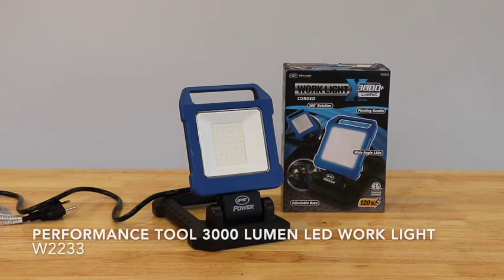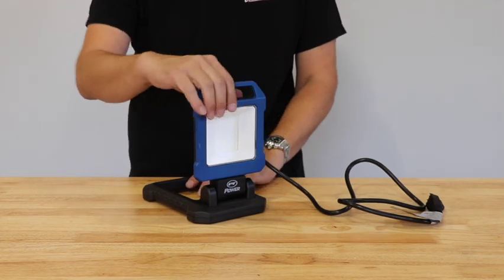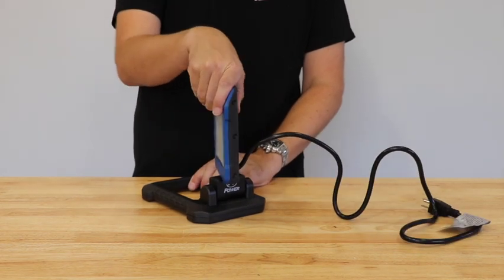The Compact and Portable Performance Tool WorkLite X provides you plenty of bright light wherever you need it. It features wide-angle LED lights that produce over 3,000 lumens.